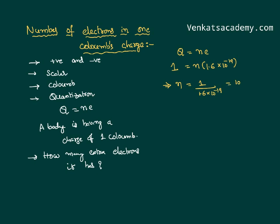That is 10 power plus 19 by 1.6, or 0.625 into 10 power 19, or 6.25 into 10 power 18 electrons. The number of electrons is 1 by 1.6 into 10 power 19.